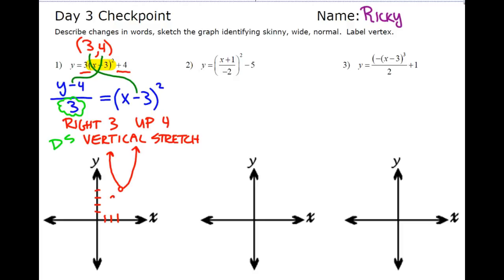So where's my vertex going to be? I'm going to go to the right three, up four, it's going to be up here, no reflections, and it's going to be a skinny, skinnier than the parent function. It's going to grow faster parabola. So that's going to have a vertex of three, four, and it's going to be skinny.